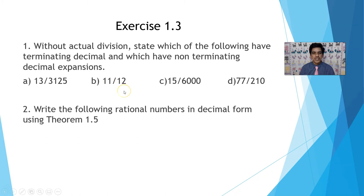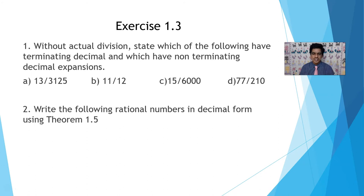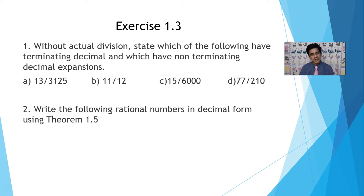The first set of problems in Exercise 1.3 asks: without actual division, state which of the following are terminating and which are non-terminating recurring. The method is simple: cancel common factors, then factorize the denominator. If prime factors of the denominator are only 2s and 5s, it is a terminating decimal; if there are other prime factors, it is non-terminating recurring.